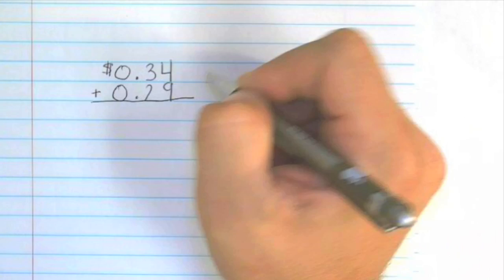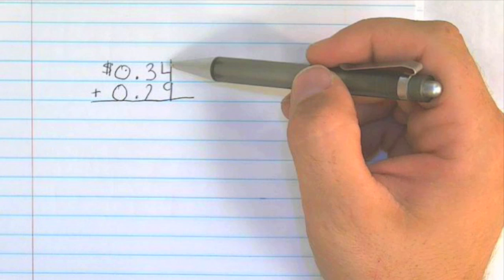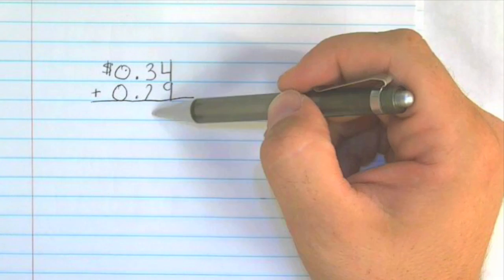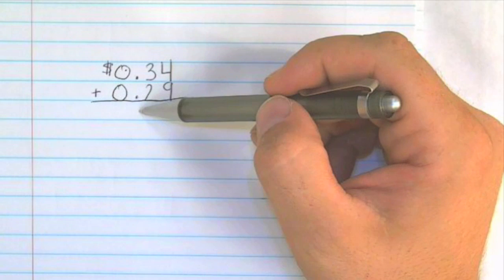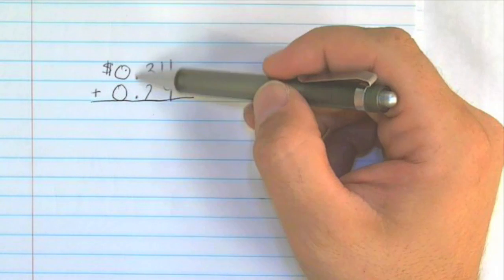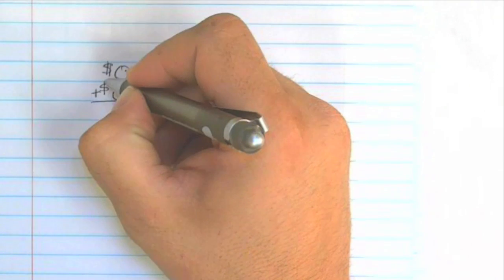Again, it's very important that you write neatly, and that not only the numbers are lined up in the right columns, but that the decimal point is also lined up right on top of each other. And because it's money, you need to make sure you have a dollar sign.